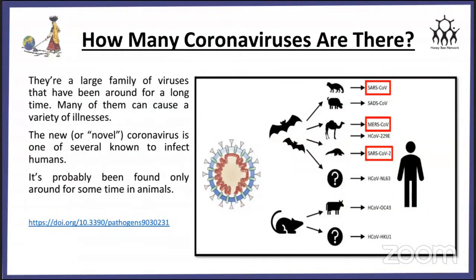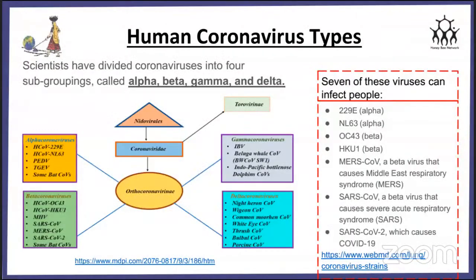How many coronaviruses are there? There are a large family of viruses that have been known for a long time. Many of them can cause a variety of illnesses. The novel coronavirus is one of several known to infect humans, probably having been found only in animals for some time. Scientists have divided coronaviruses into four subgroupings: alpha, beta, gamma, and delta. There are seven viruses that can especially infect people, as obtained from WebMD.com.